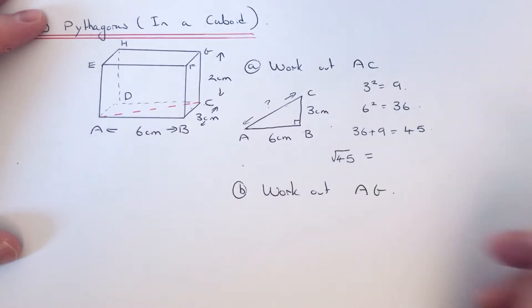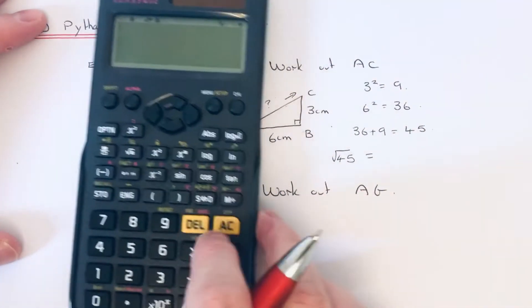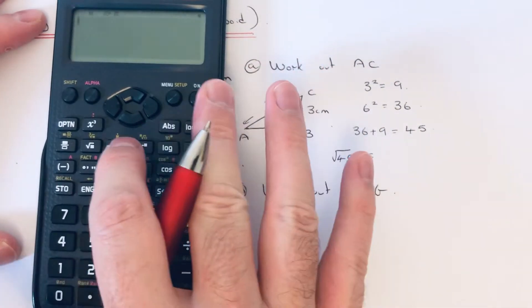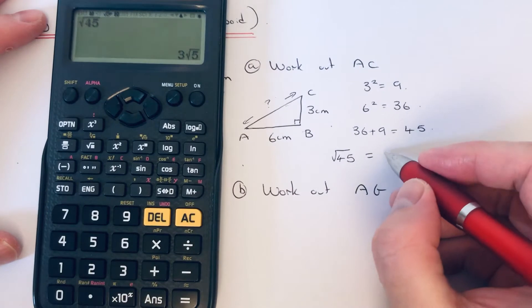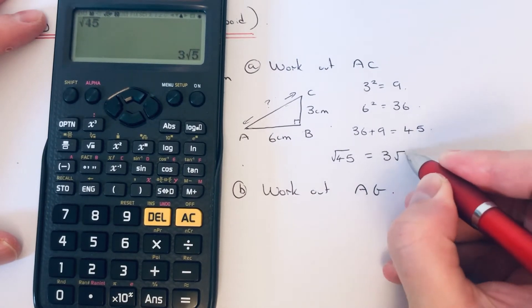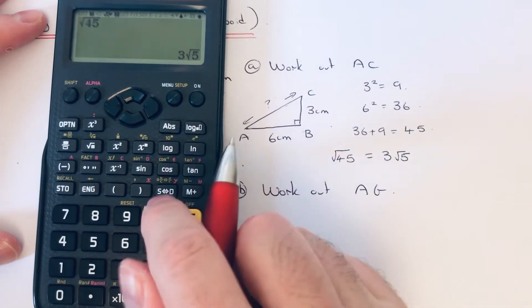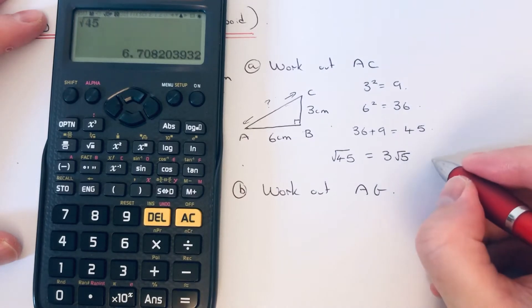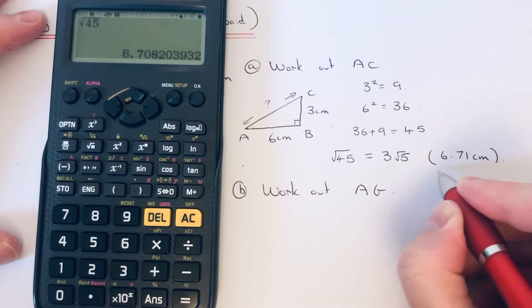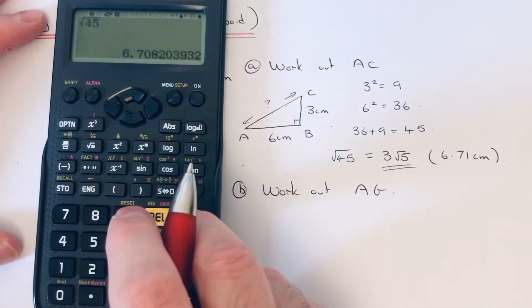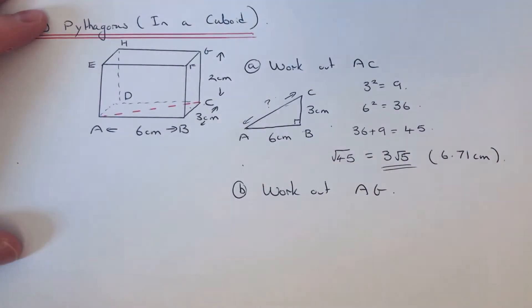Then we square root the answer. Square root of 45, I'm just going to put that on the calculator, and it simplifies to 3√5. If you want it as a decimal, it will be 6.71. Normally it's best to leave the answers in surd form because sometimes you have to use that for the next part of the question.